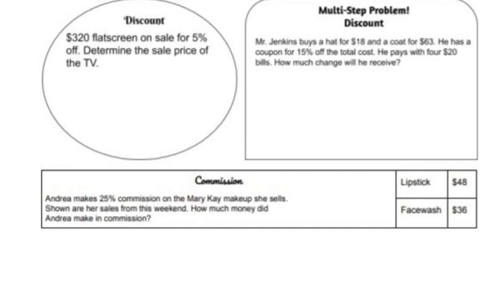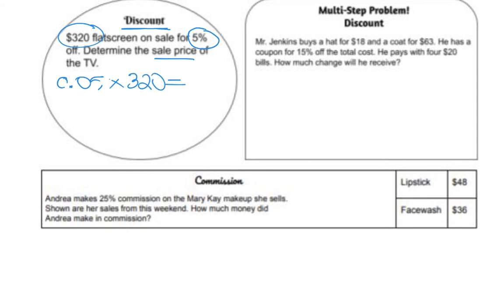Now we're going to go on to discount. A $320 flat-screen TV is on sale for 5% off. We need to find the sale price, which is the price after you take the discount off. So we find 5% of $320: 0.05 times $320 equals $16 off. I'm writing 'off' so I don't forget that's the discount.